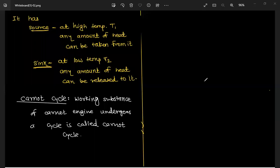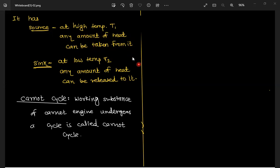The Carnot engine has one source at high temperature T1, from which any amount of heat can be taken. Then there is a sink at low temperature T2, to which any amount of heat can be released.